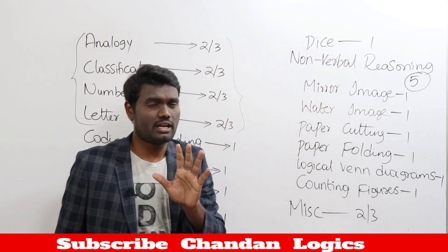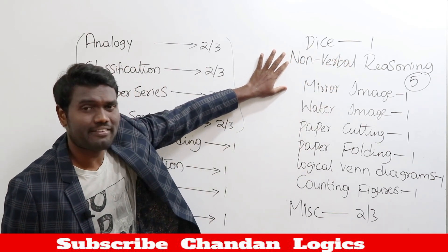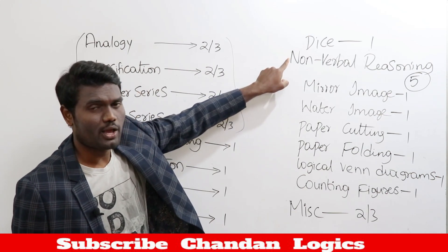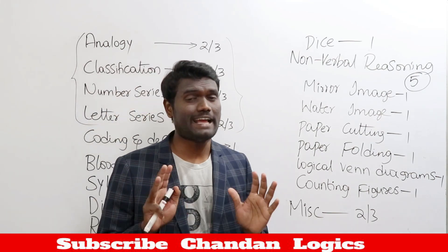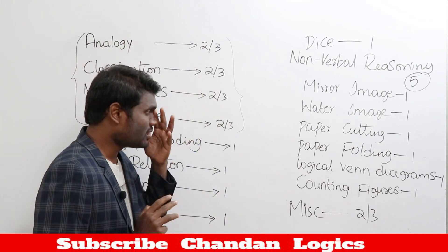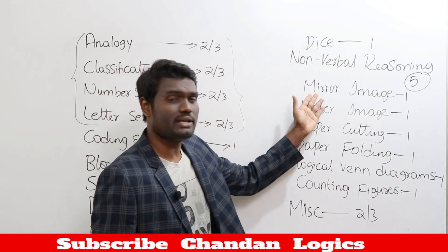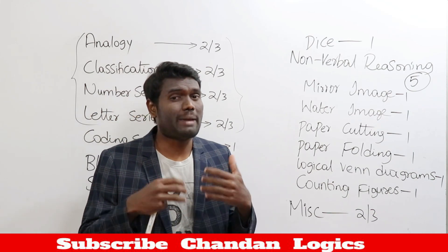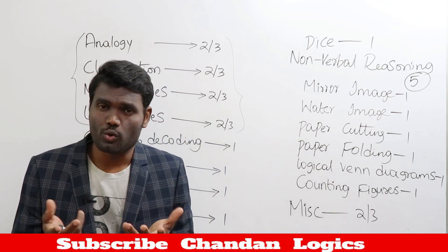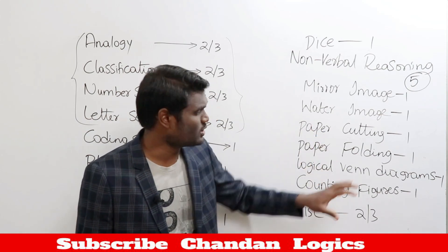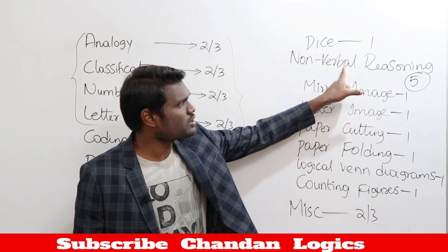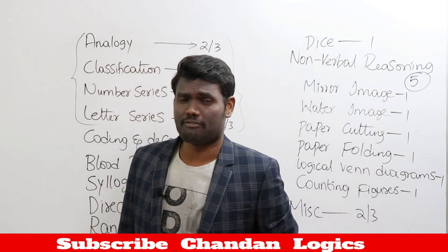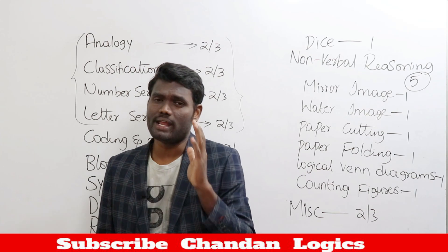From dice you'll get one question. Non-verbal reasoning is one of the examiner's favorite regions in the reasoning part — from non-verbal reasoning you'll be getting approximately five questions of pictorial representations. These include mirror images, water images, paper cutting, paper folding, embedded figures, counting figures, and logical Venn diagrams.